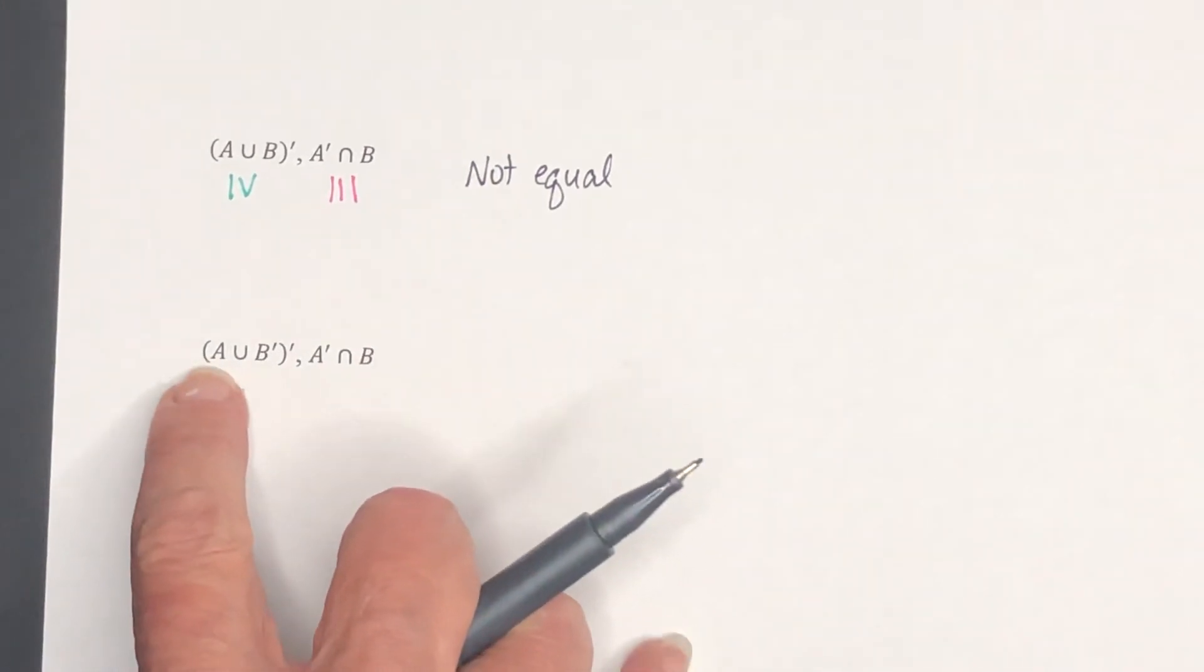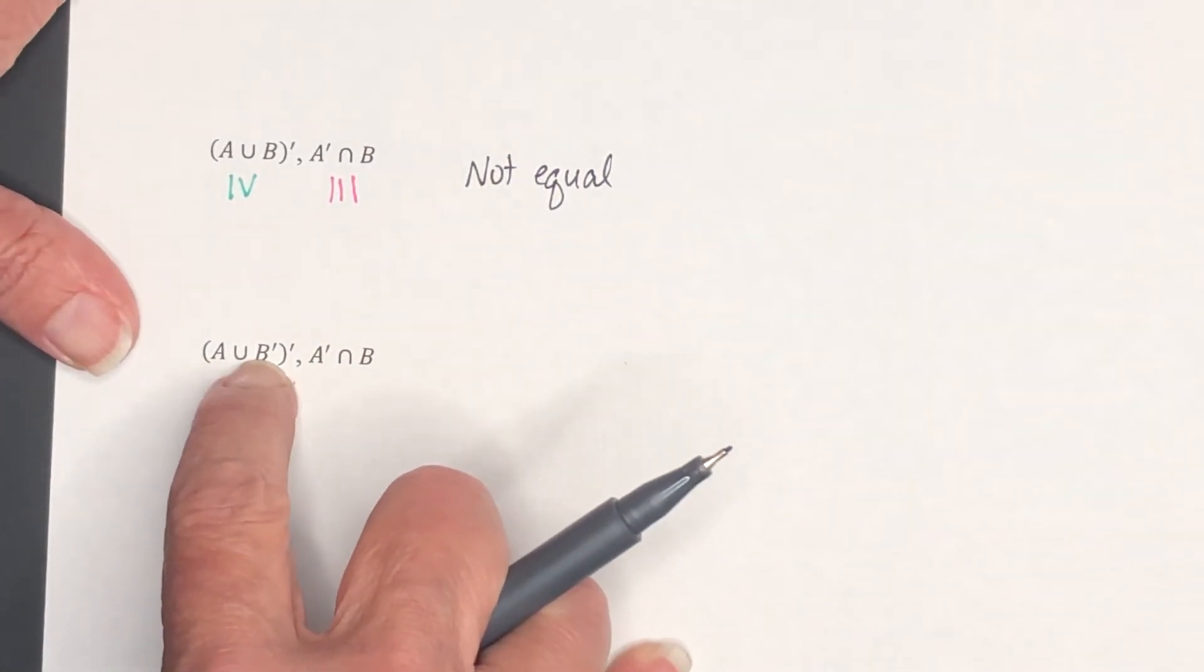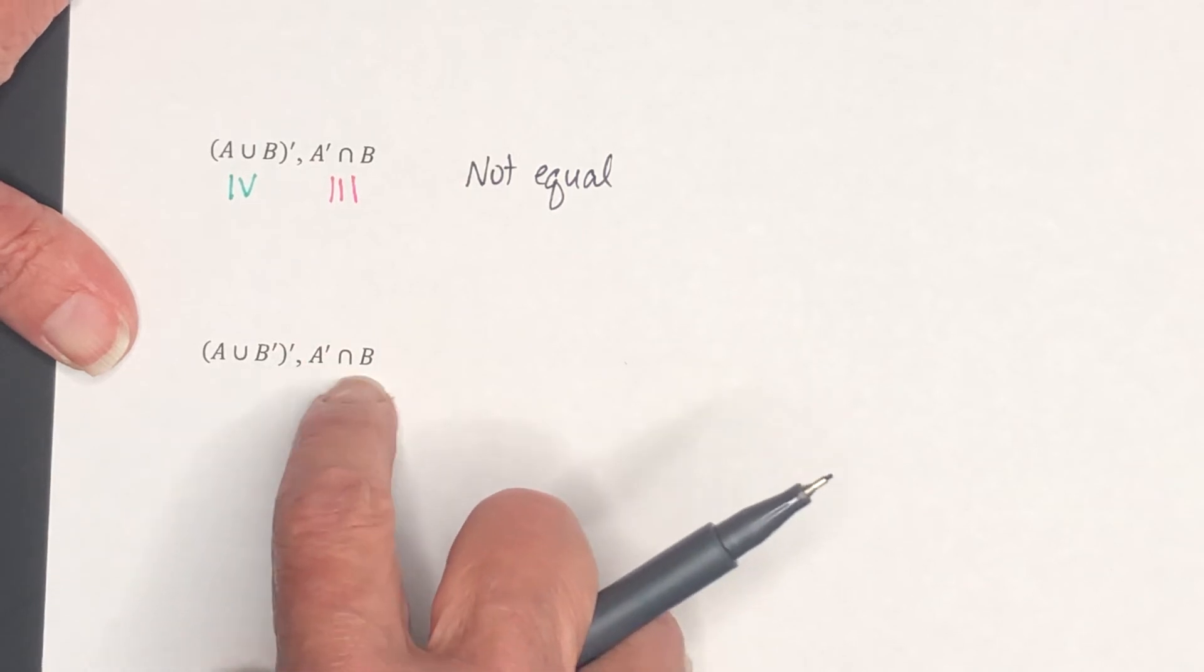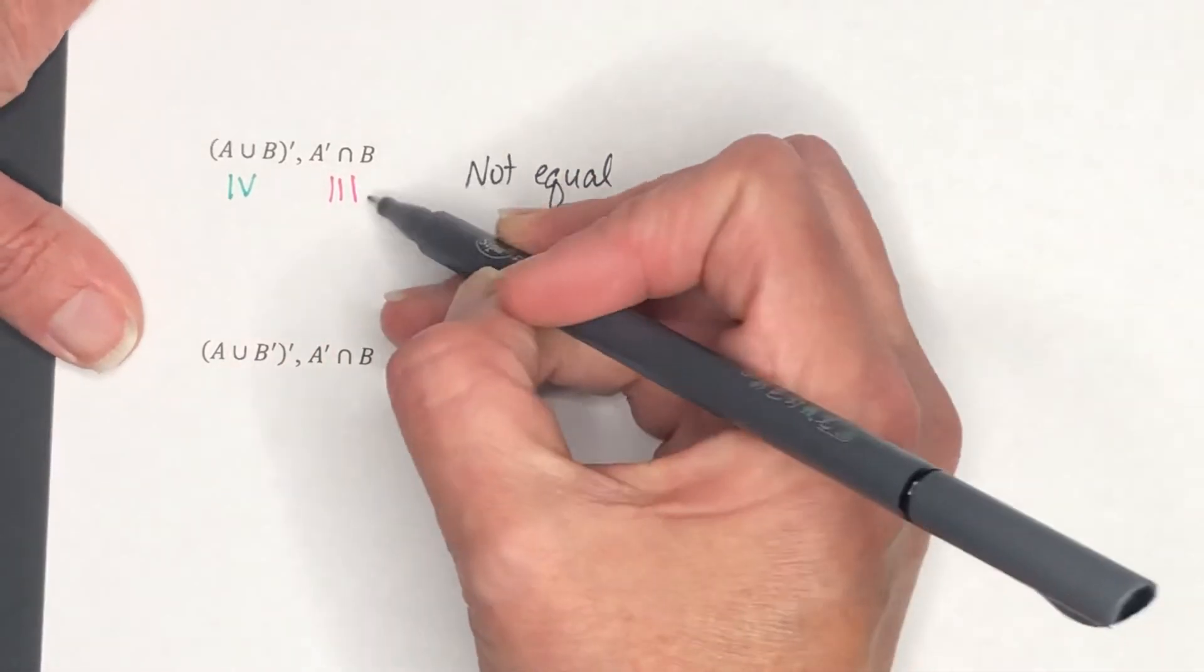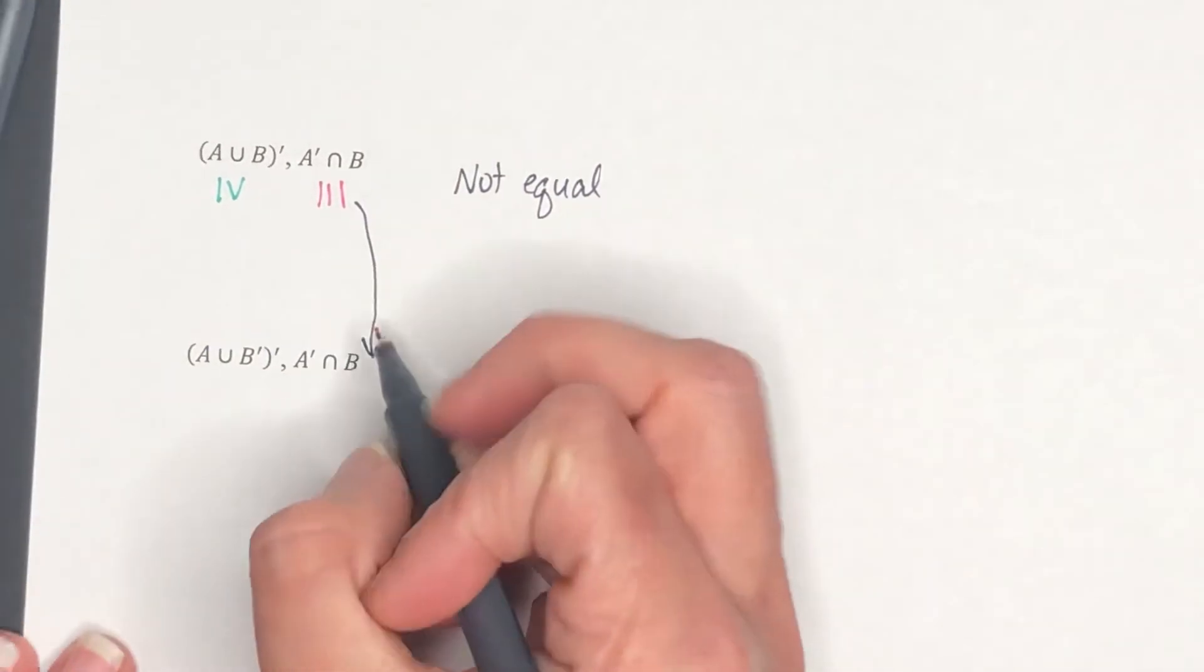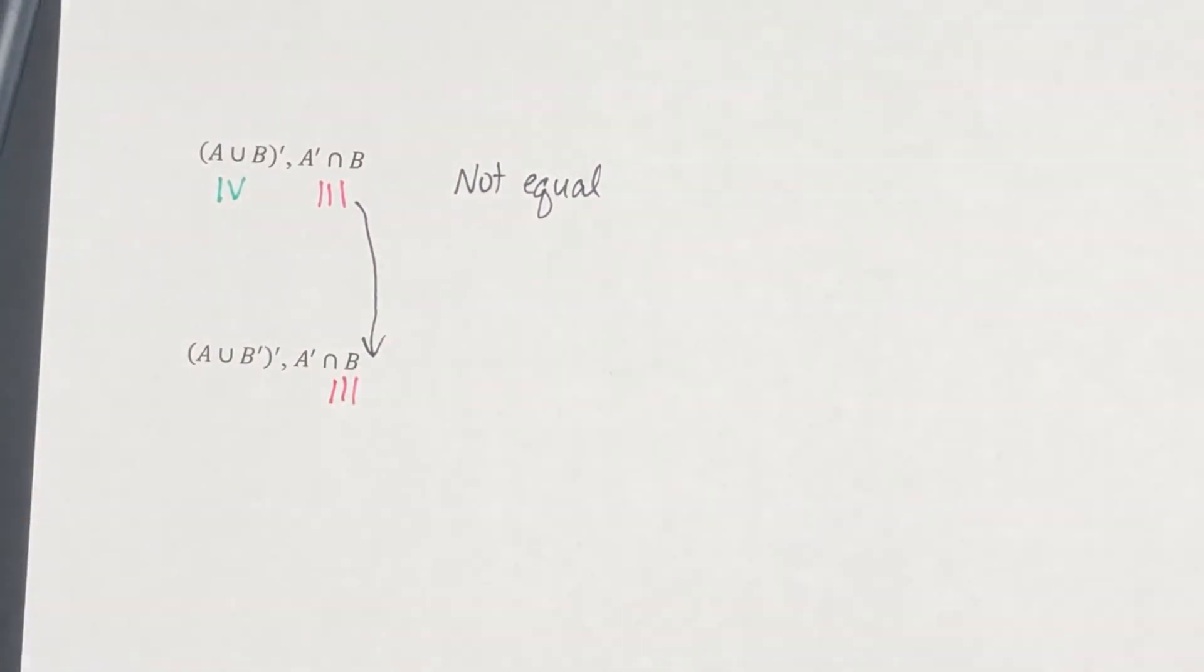Okay, now here. A union B complement, complement. And then A complement intersected with B. Now, thankfully, we've already thought through that one. We know from the one above that this is talking about region 3. So we don't have to redo that. No reason to redo the work you've done before.